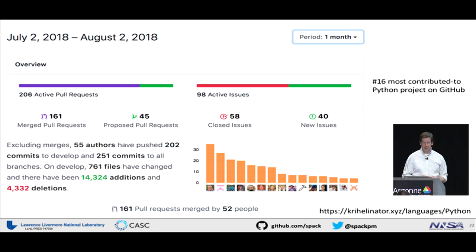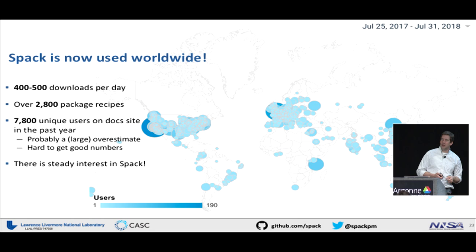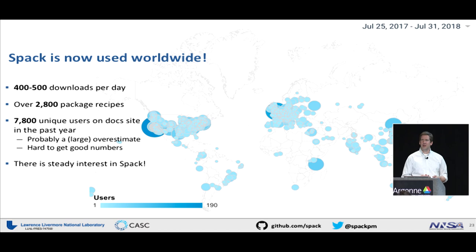It's used worldwide. I did some stats on the documentation page — these are user counts for different cities all over the world for how many users accessed our documentation from those places. Google says it's around 7,800 unique users, though I think that includes your iPhone, your browser, your other browser, so that's probably an overstatement. But it shows we're getting constant interest and people are actually using this thing and reading the docs. People download SPAC 400 or 500 times a day — most of that is continuous integration, but still, that's pretty cool.